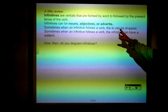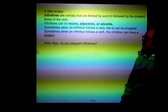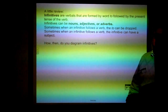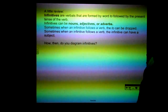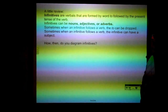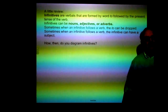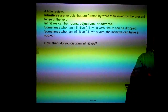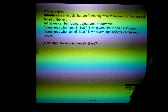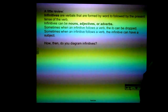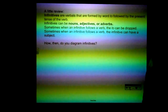Just a reminder: infinitives are verbals formed by the word "to" followed by the present tense of the verb. Infinitives can be nouns, adjectives, or adverbs. Sometimes when an infinitive follows a verb, the "to" can be dropped. Sometimes when an infinitive follows a verb, the infinitive can have a subject. Most of the time it is "to" plus the verb. Occasionally, the "to" can be dropped. Occasionally, infinitives can have subjects. So the question becomes: how do you diagram infinitives?